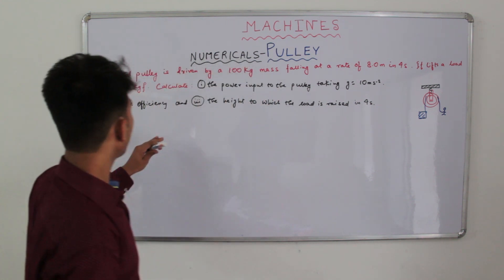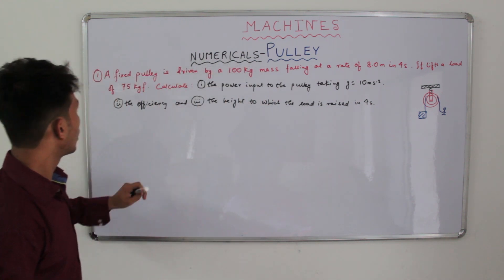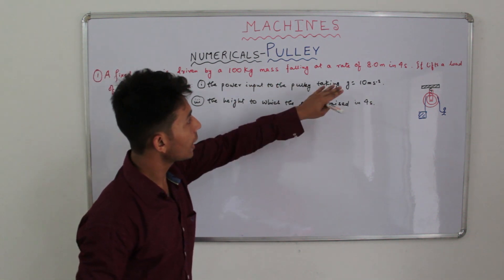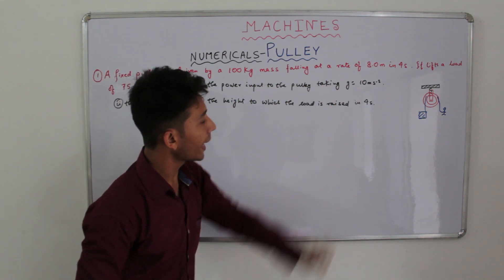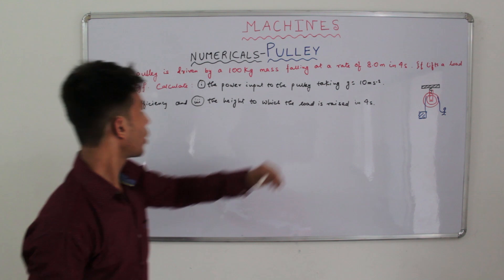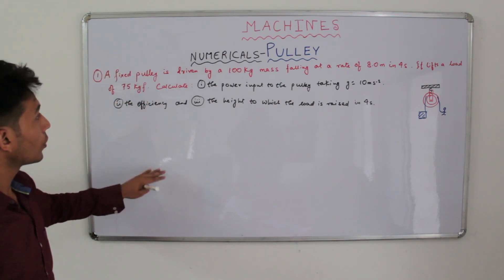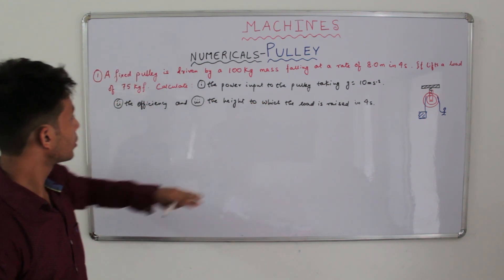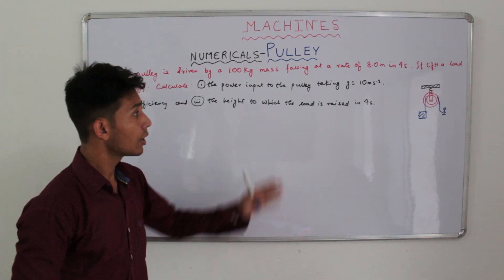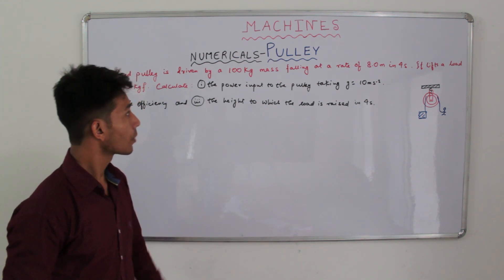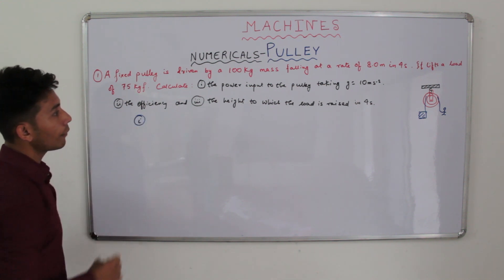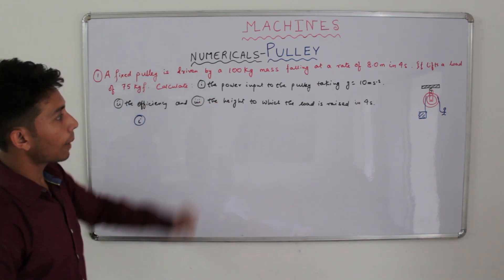In the first numerical, a fixed pulley is driven by a 100 kilogram mass falling at a rate of 8 meters in 4 seconds. It lifts a load of 75 kgf. We have to calculate the power input, the efficiency, and the height to which the load is raised in 4 seconds. So let us find the first part — the power input.